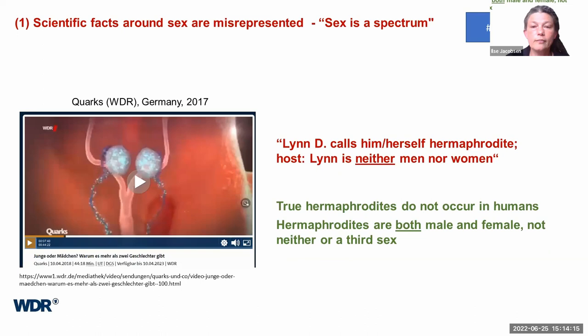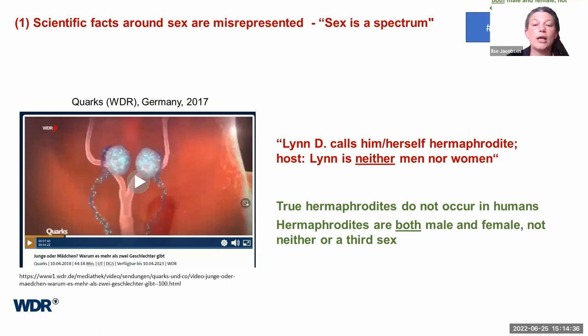A few other quotes from those 45 minutes: there is a person called Lynn Lee introduced who calls himself or herself a hermaphrodite, and the host explains that Lynn is neither man nor woman. Well, true functional hermaphrodites do not occur in humans. Hermaphrodites are both male and female — they're not neither. They're actually both, and they certainly do not constitute a third sex.